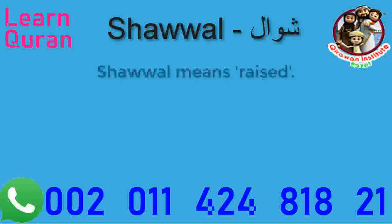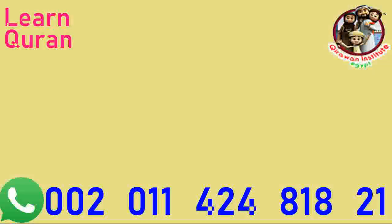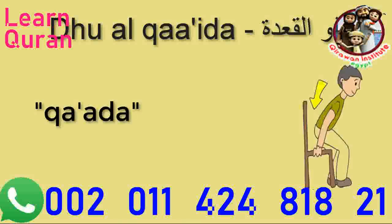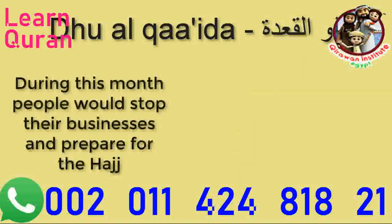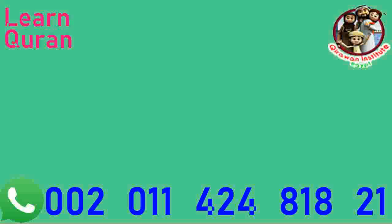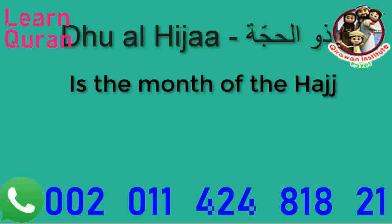The tenth month of the Islamic calendar is Shawwal. Shawwal means raised, taken from the word Shala, which means when the female camel gets pregnant. The eleventh month of the Islamic calendar is Dhul Qa'ada, taken from the word Qa'ada, which means to sit. During this month, people would stop their businesses and prepare for the Hajj. The twelfth and final month of the Islamic calendar is Dhul Hijjah — the month of the Hajj.